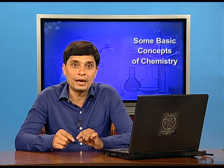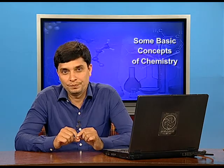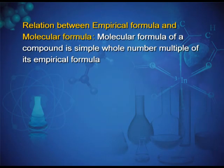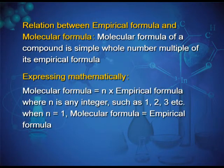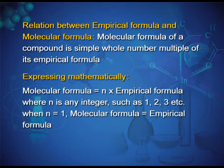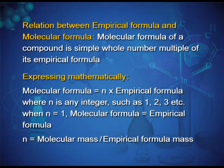The relation between empirical formula and molecular formula: molecular formula = N × empirical formula, where N is an integer (1, 2, 3…). When N = 1, molecular formula equals empirical formula. N = molecular mass ÷ empirical formula mass.